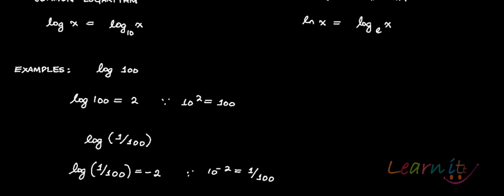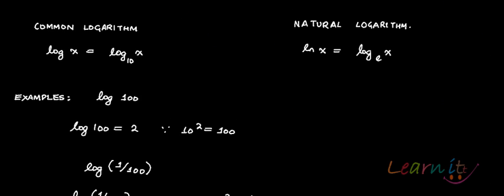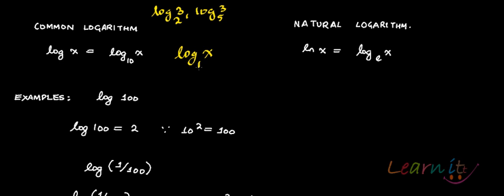There are two kinds of logarithmic functions you commonly see: natural logs and common logs. For common log, whenever no base is written — for example, log of 3 or log of x — it is assumed to be base 10. So if nothing is written, the base is 10.